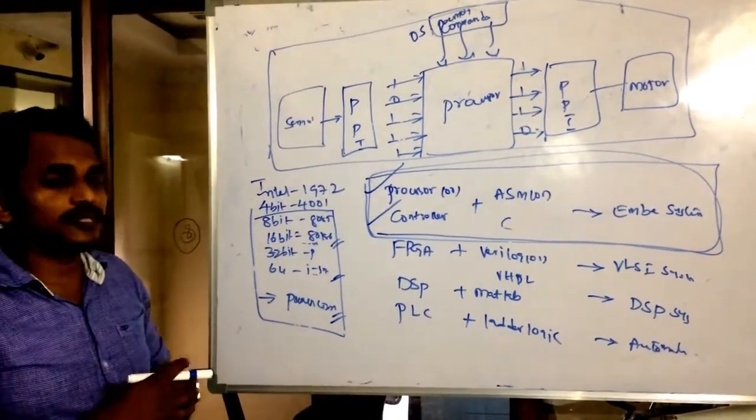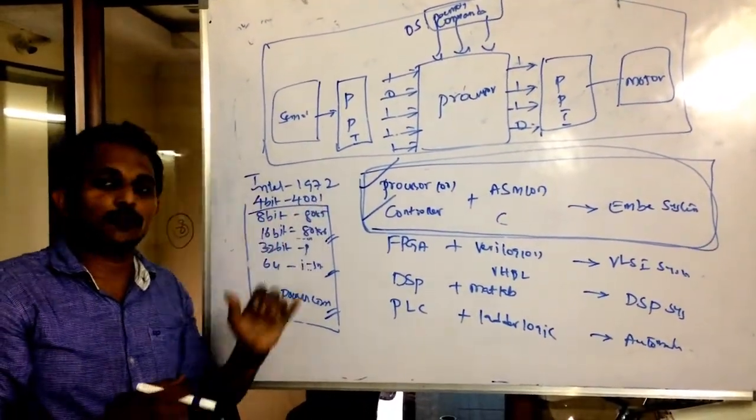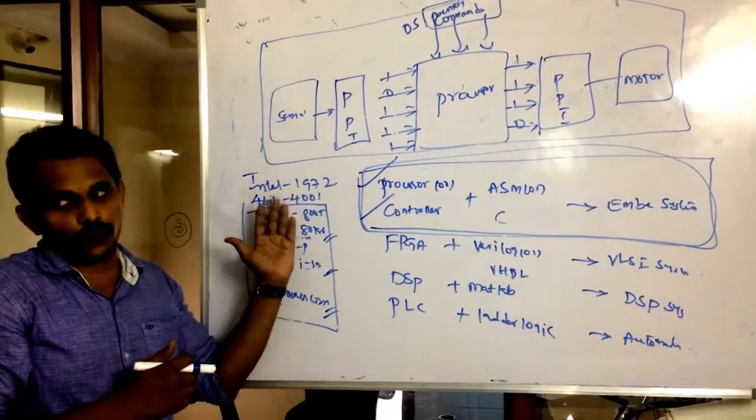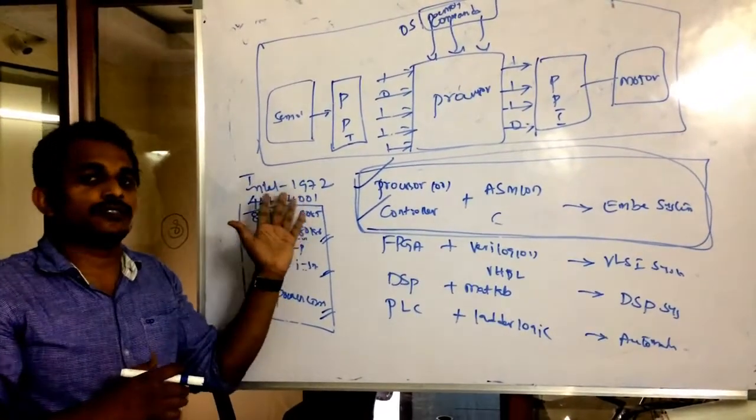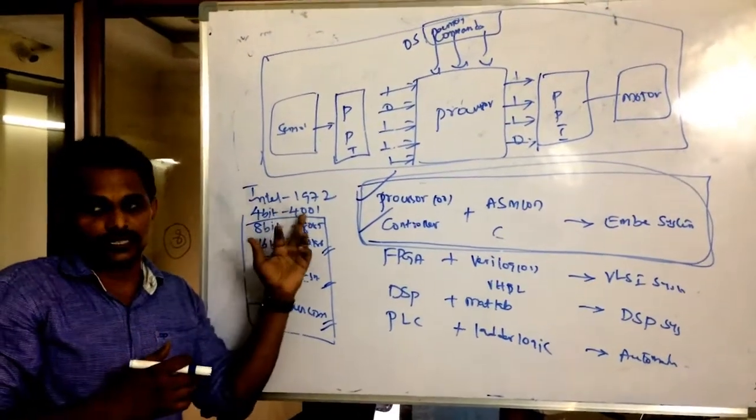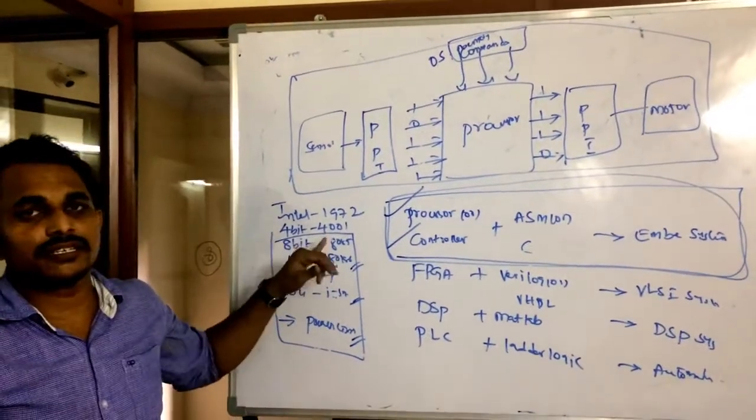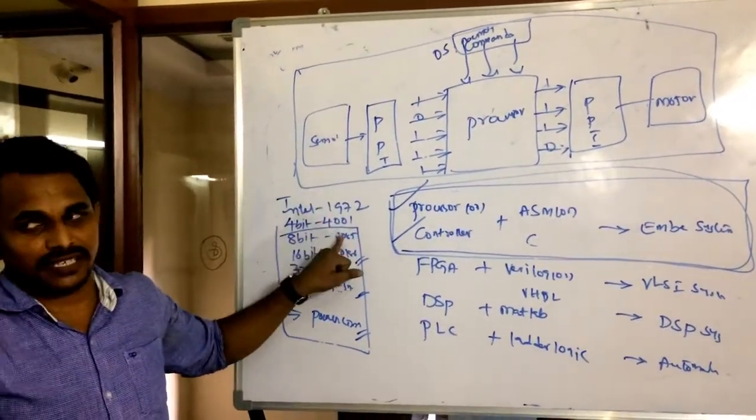The inventor of this processor is Intel. Still if you purchase any computer, the processor is from which company? Intel only. Because these people have some rights towards license. They are maintaining still for processor's case. They don't provide any licenses to other manufacturers. Still these people are the leaders towards processor manufacturing.